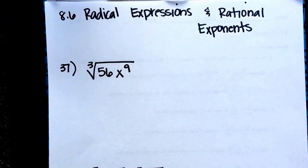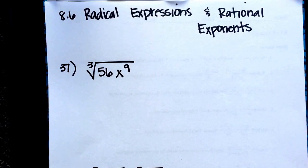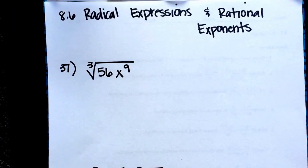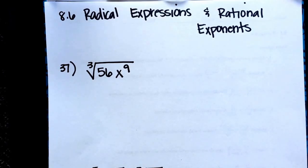I decided to do five problems from 8.6, radical expressions and rational exponents. We're going back and forth between radicals and rational or fraction exponents, and then also simplifying them. There are quite a few different things that can happen, and with people on the FBLA field trip, I thought I'd do several today.